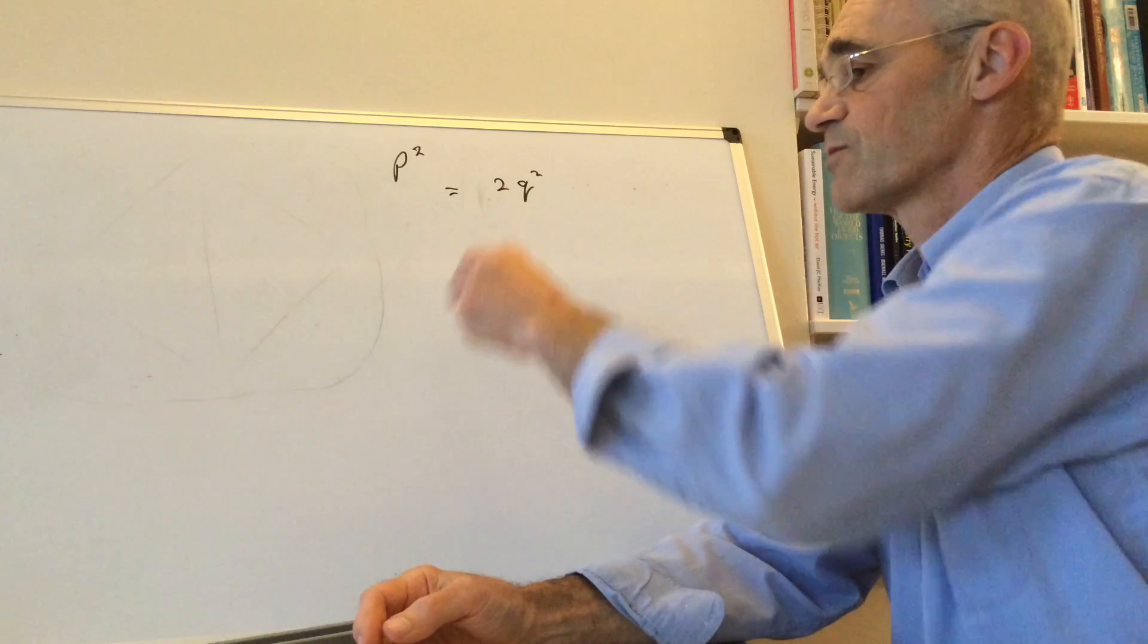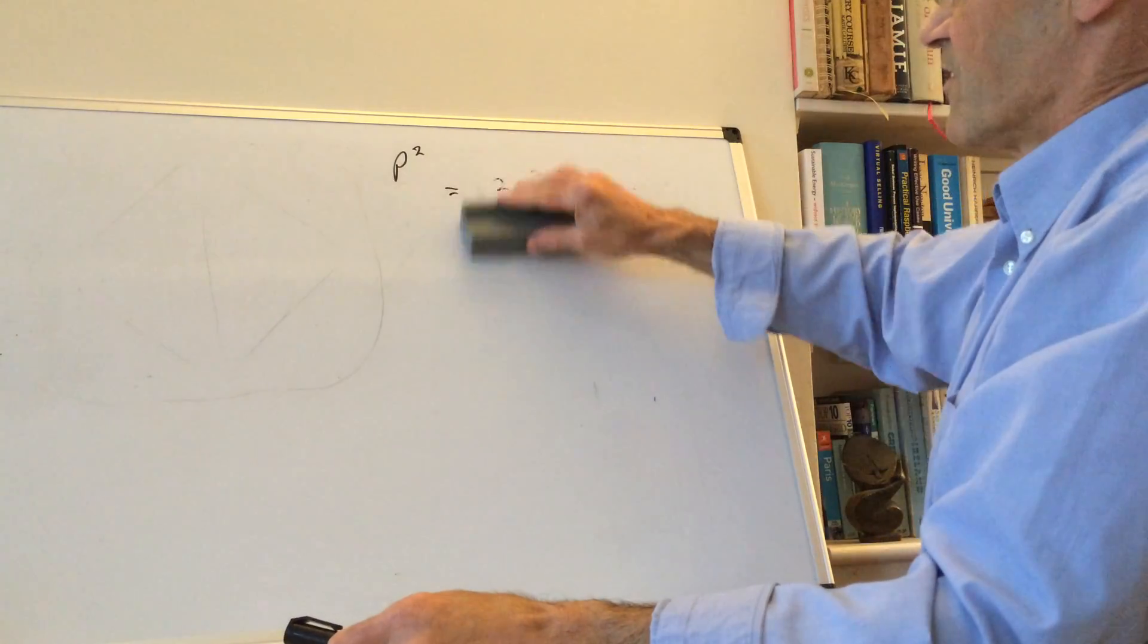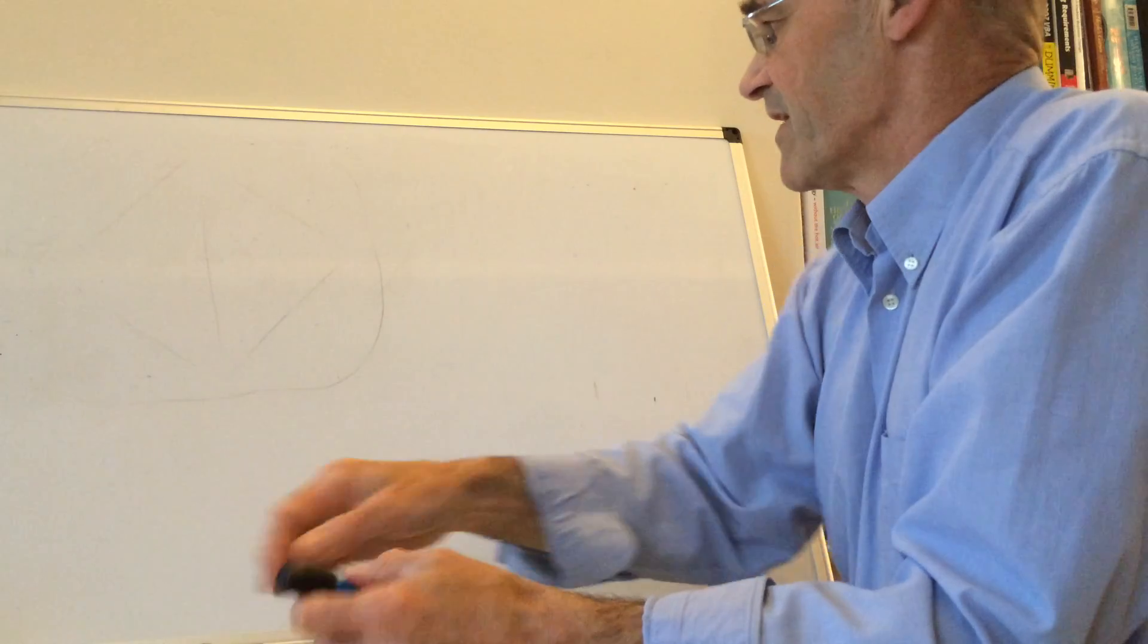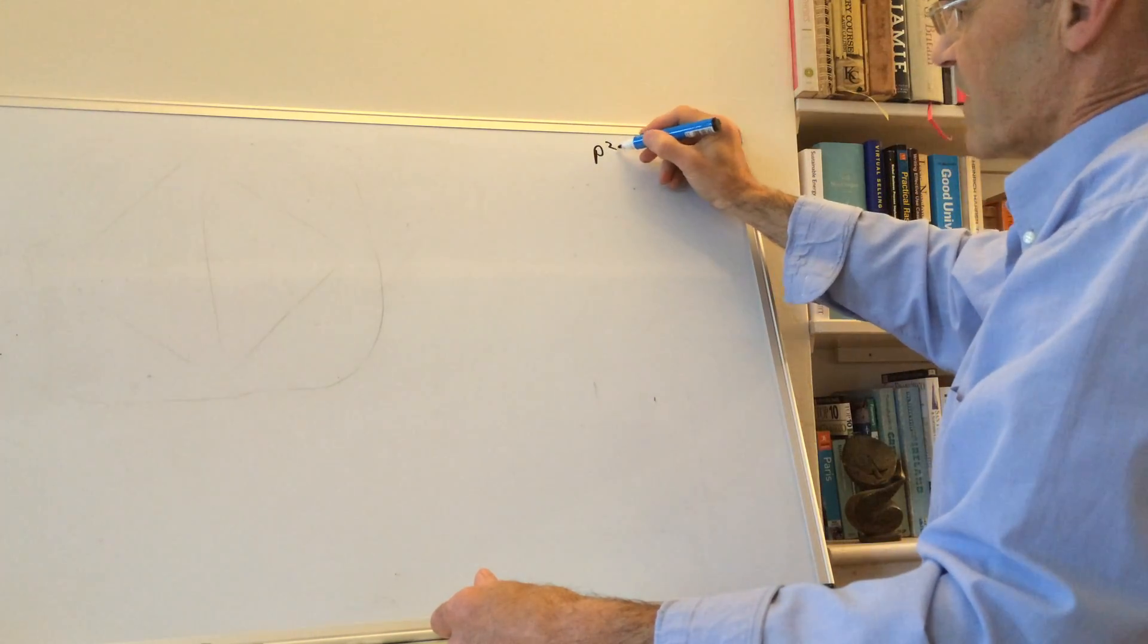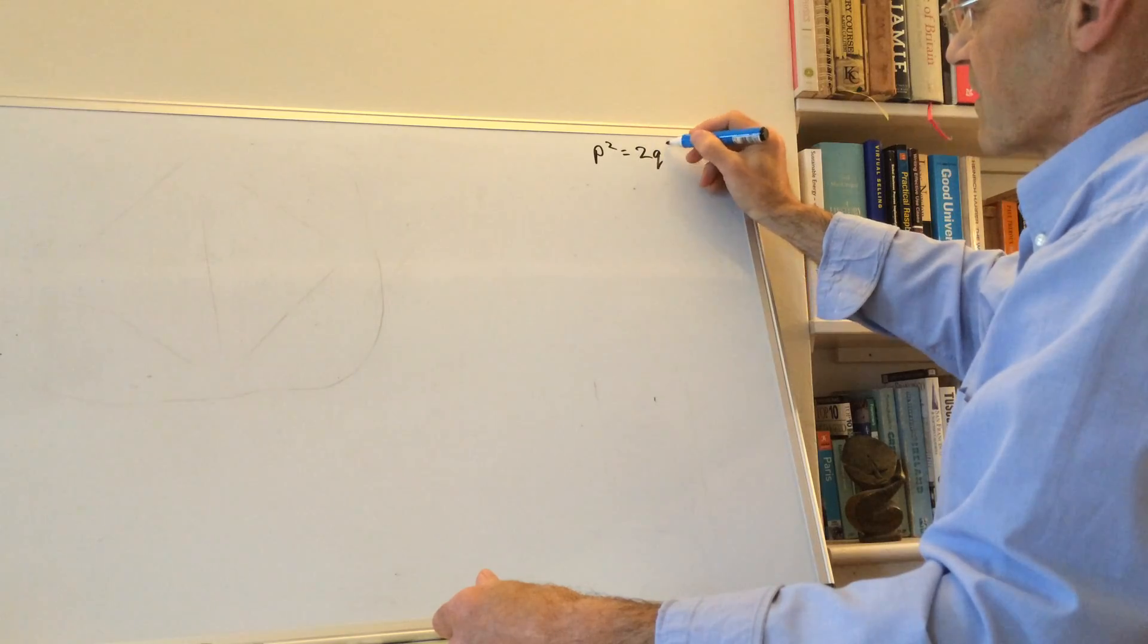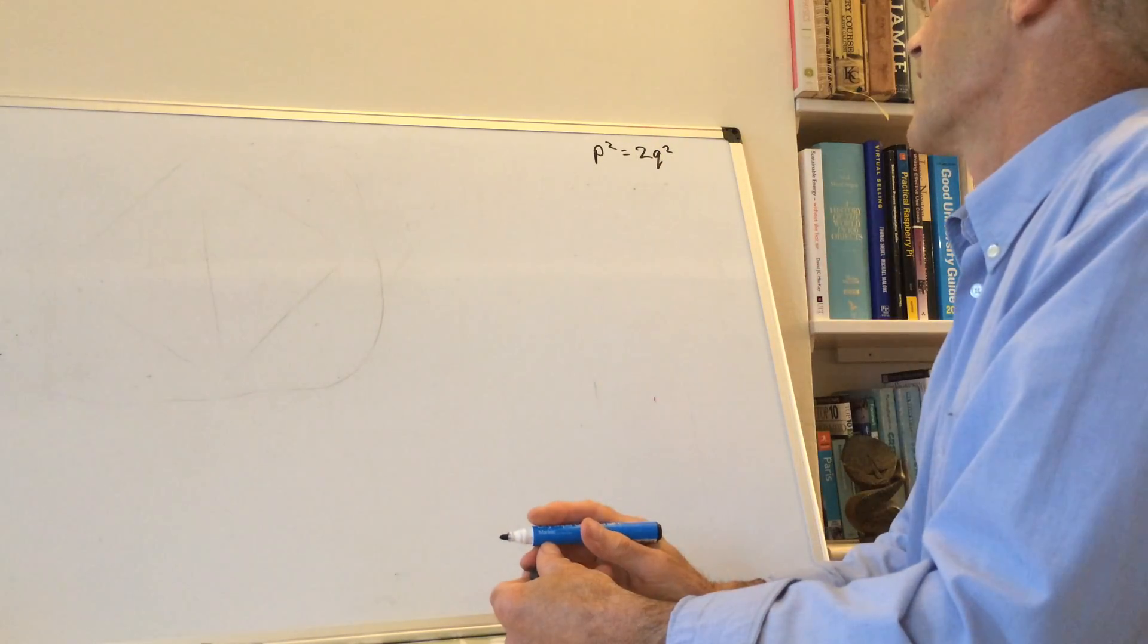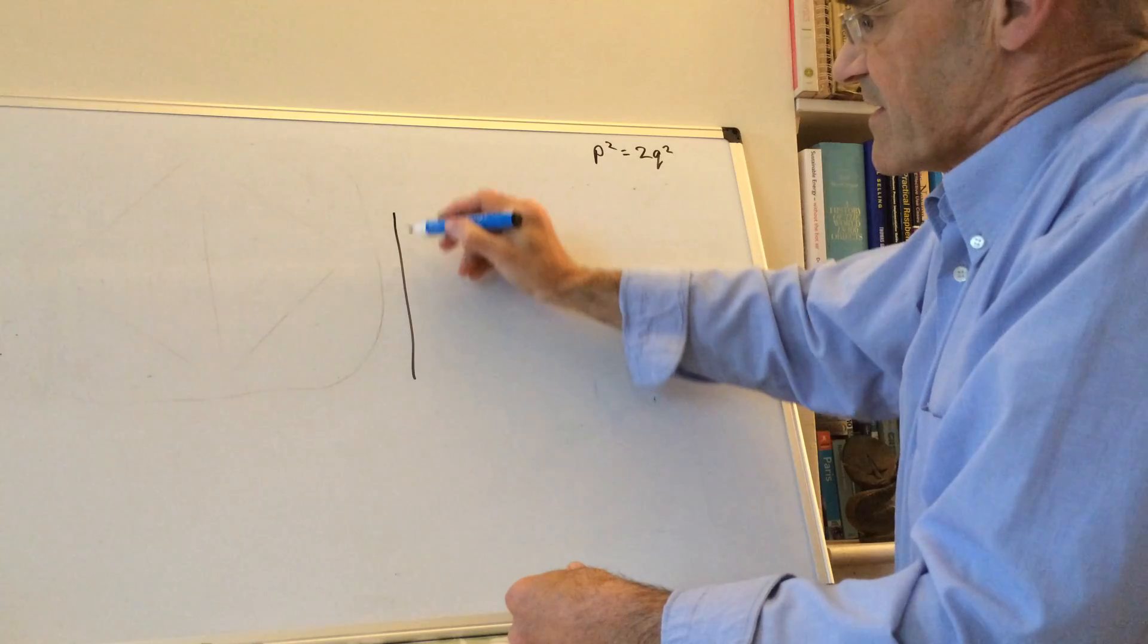So if we draw that out in geometry, let me just put it back so I don't forget it: p² = 2q². Okay, so let's draw that out as a square.